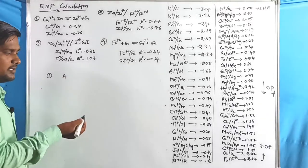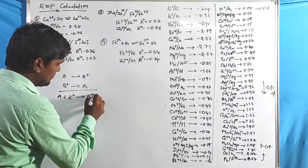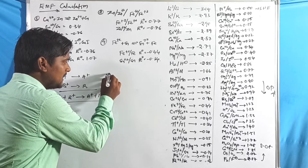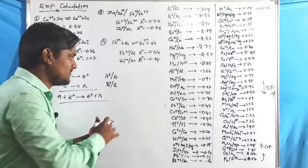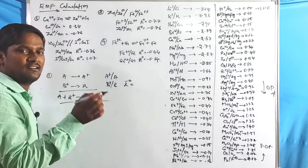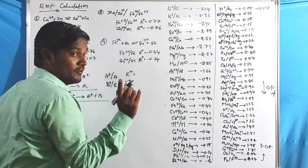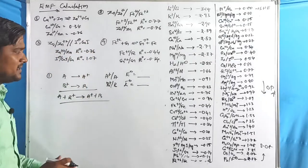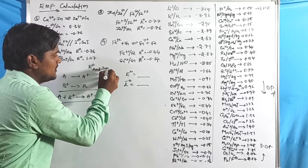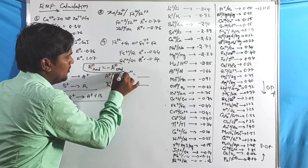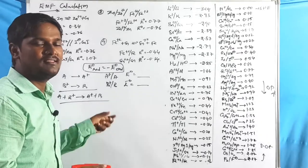For the first concept: if A converts into A⁺ and B⁺ converts into B, the overall reaction is A + B⁺ → A⁺ + B. Here they are given the reduction potential values for A⁺/A and B⁺/B. We know that E°reduction = −E°oxidation, so wherever oxidation occurs we need to change the sign.